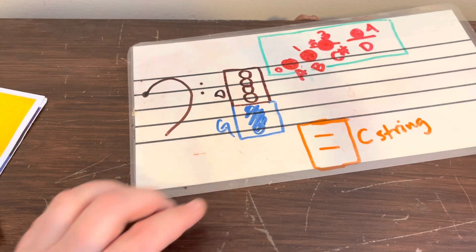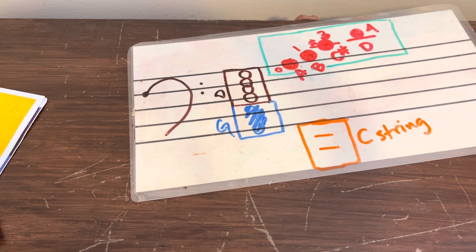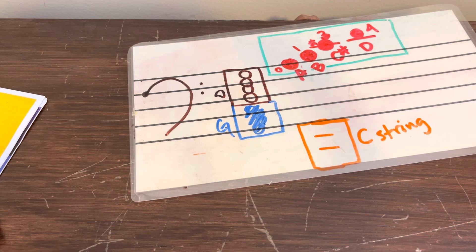So when you're learning, when we're learning note reading, one of the first things you want to look for is where that note is on the staff, so you know what string you're going to play.